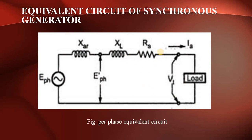Next we will look at the equivalent circuit of the synchronous generator or alternator — the per-phase equivalent circuit. E_phase is the induced EMF per phase. XAR is the armature reaction reactance, XL is the leakage reactance, and RA is the armature resistance. The armature winding current equals the load current iL. The voltage across the load terminals is the terminal voltage, denoted VT, and is also referred to as E-dash per phase.